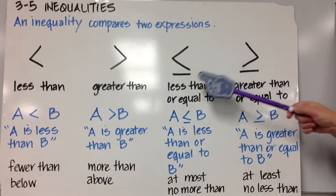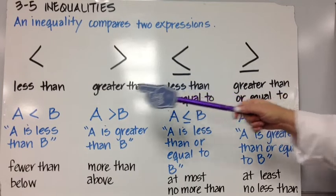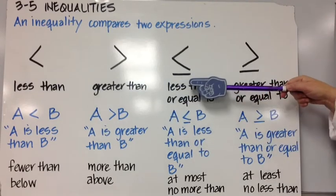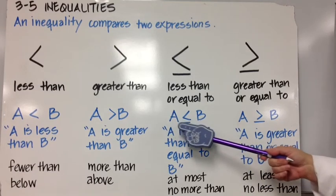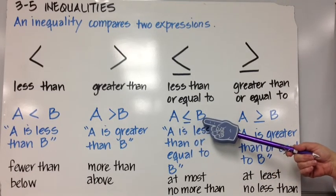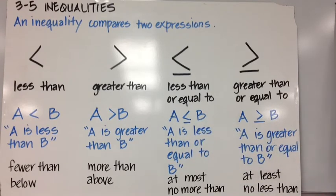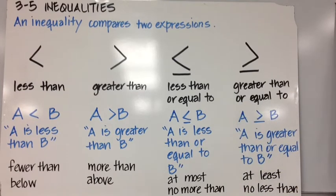Less than or equal to. Notice the only difference between this symbol and the less than symbol is the line underneath it, which represents 'or equal to.' A is less than or equal to B. We could also say 'at most' or 'no more than' to represent less than or equal to.